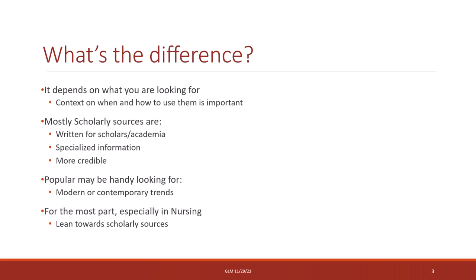So what's the difference between the two? It depends on what you are looking for and how you plan to use the information. Scholarly sources, tailored for scholars and academia, usually contain specialized information. Due to the peer review process and evaluation by field experts, scholarly sources are generally considered more credible. However, popular sources can be useful for exploring modern trends or gaining insights from a non-peer reviewed perspective. In fields like nursing and many medical disciplines, emphasis is often placed on scholarly sources over popular ones.